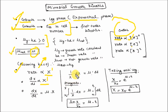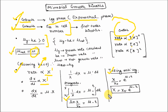Integrate this equation by putting the limits x₀ to x, where x₀ is the initial biomass concentration and x is the final biomass concentration, and 0 to t. After integration, you will get: ln(x/x₀) = mu × t. By taking the antilog, you will get x = x₀ · e^(mu·t). You can see that x is exponentially increasing — it is an exponential function.